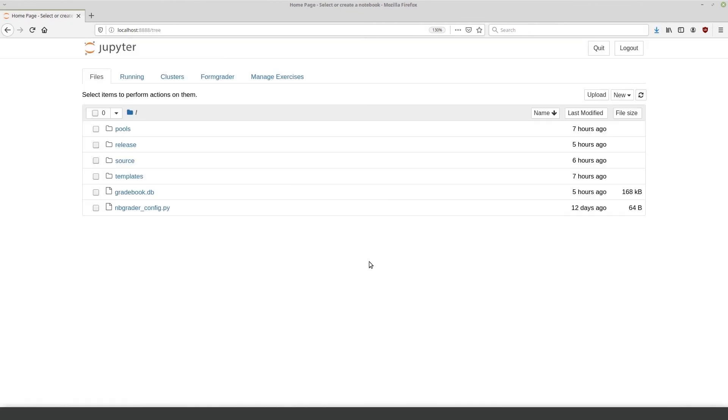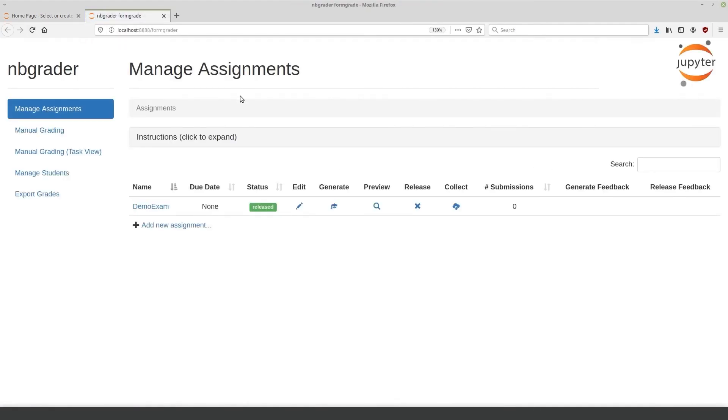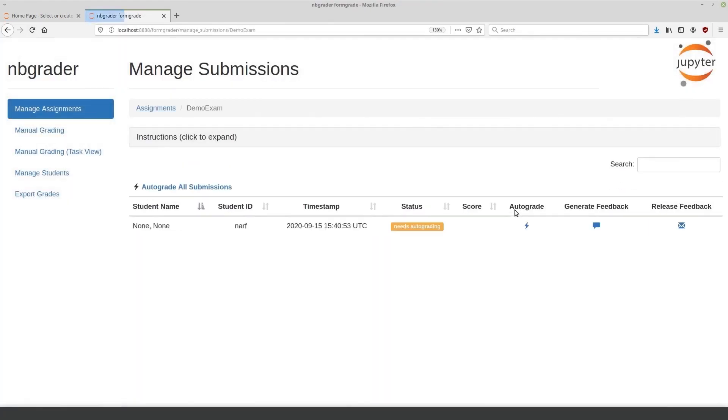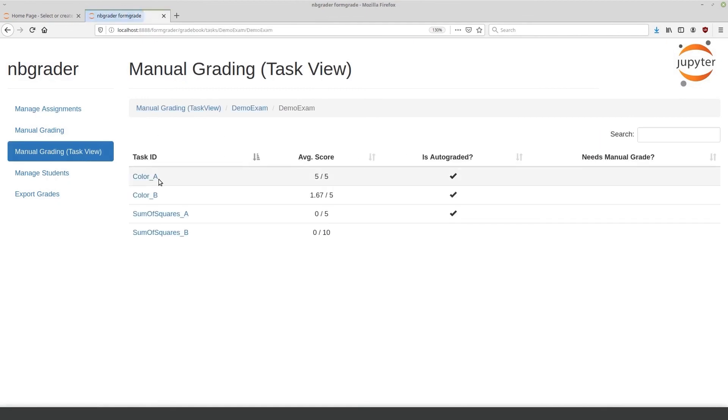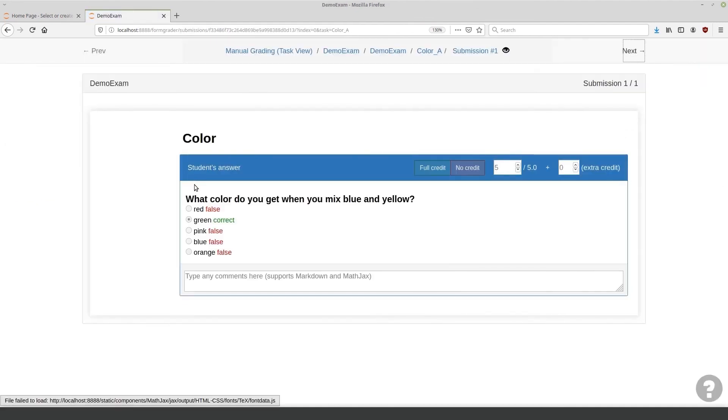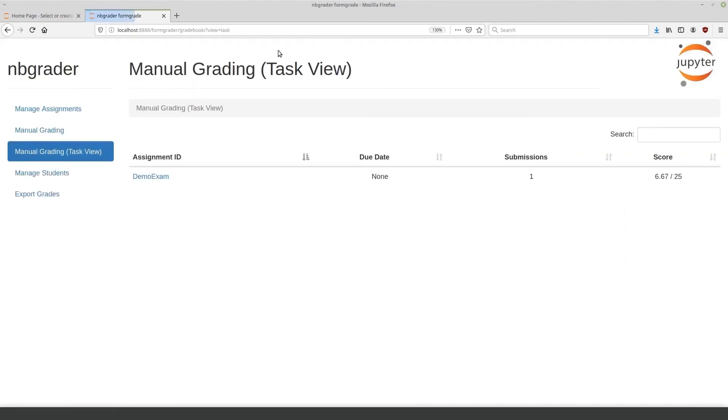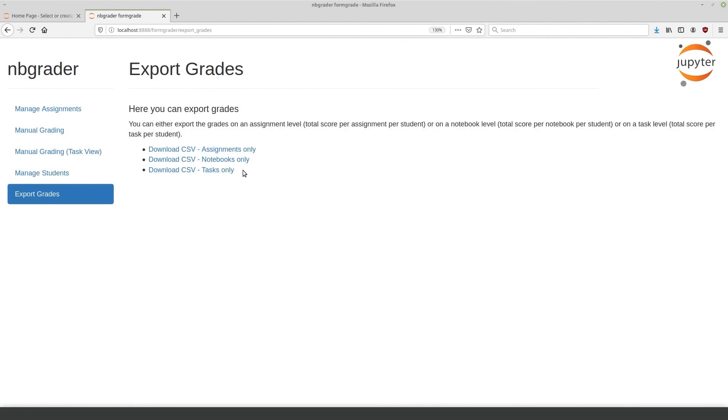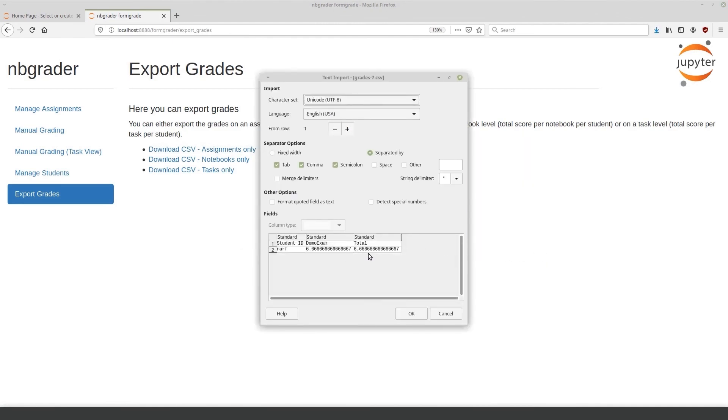Now, let's look at grading the exam. We're back at the teacher's view and we select the form grader tab, collect our submissions, auto grade them and then finally we go to the grading view and our new view is the task view where you can see that instead of looking at the whole notebook you can look at each task on its own. So, let's look at color A. We have one submission for that and we see the student chose the correct answer. All the wrong answers are marked with false and the correct one is marked in green with correct. Now, let's assume we're done with all the grading. Then we would want to export the grades to our learning management system. So, we click on this and we can export it in a CSV format on an assignment, notebook, or task level. Let's do it on an assignment level. We open it and we see the student got 6.6 points in total.